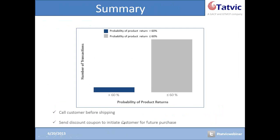I will use the predict function again, passing the model as an argument which I have created, and the new data set equals test because I want to predict for the transactions in the test data set. The outcome is in the form of probabilities. For each transaction in the test data set, I will have the probability of product return for that particular transaction. I will store these probabilities in a variable called 'test_predict'. I am interested in knowing which transactions have the higher probability of return — I need to subset this variable and identify transactions having higher probabilities. I will set a constraint to extract only those transactions with a probability greater than 0.6 — or 60%. As you can see in the workspace, there are 30 transactions out of 425 that have a probability of return greater than 60%.